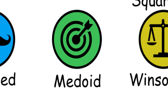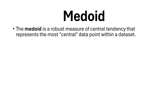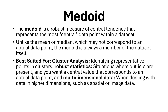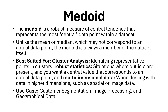Medoid. The medoid is a robust measure of central tendency that represents the most central data point within a dataset. Unlike the mean or median, which may not correspond to an actual data point, the medoid is always a member of the dataset itself. Best suited for cluster analysis and identifying representative points in clusters, robust statistics where outliers are present and you want a central value corresponding to an actual data point, and multidimensional data such as spatial or image data. Use case: customer segmentation, image processing, and geographical data.